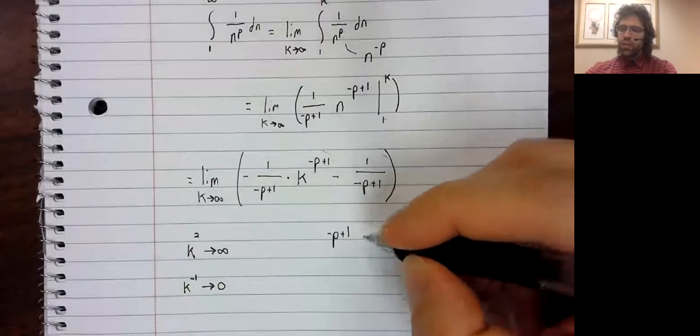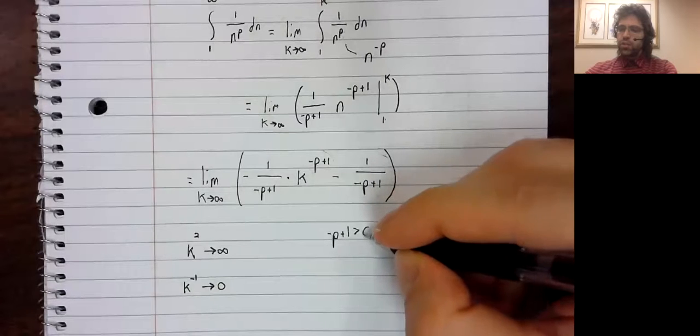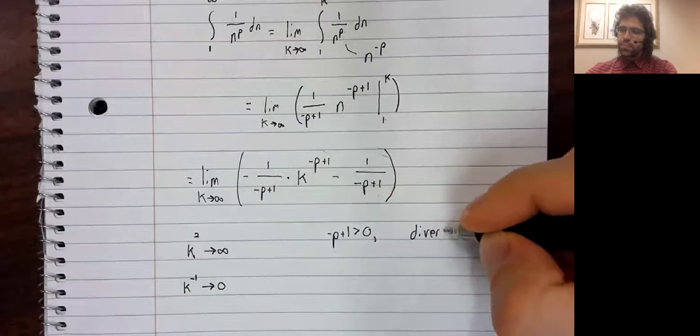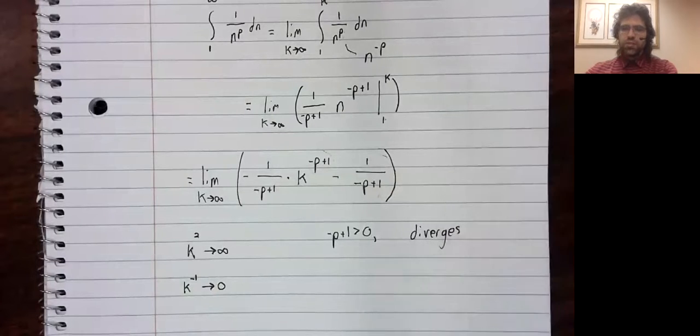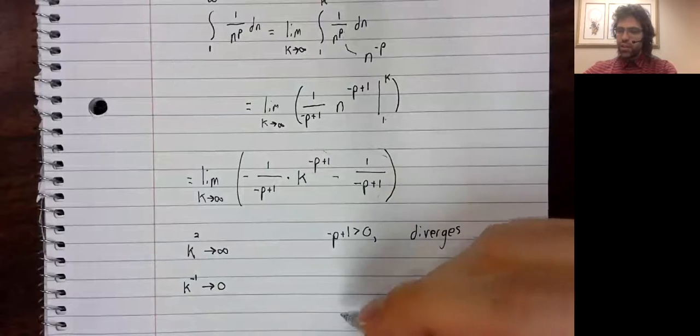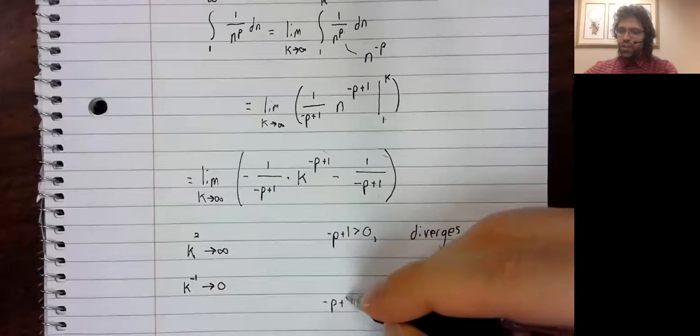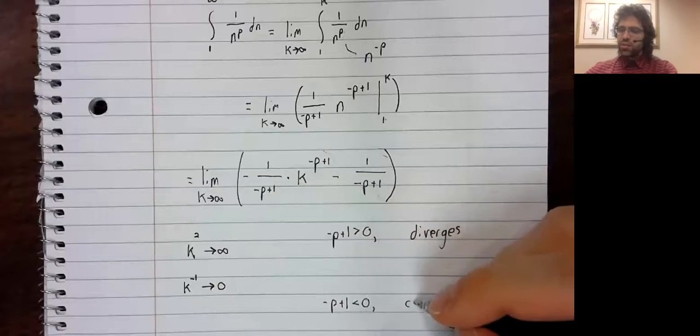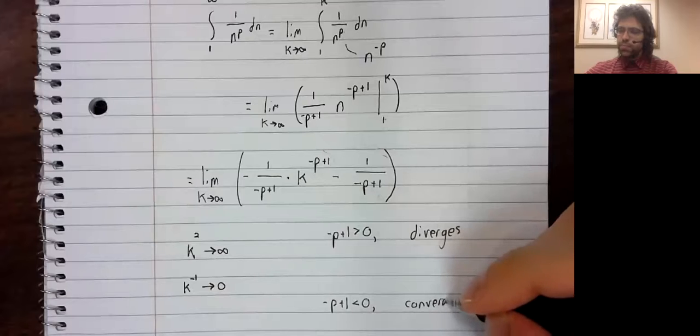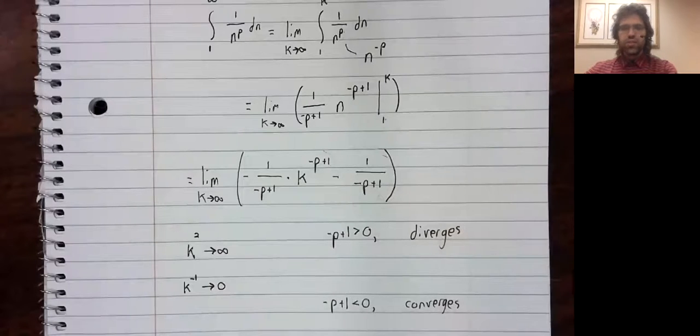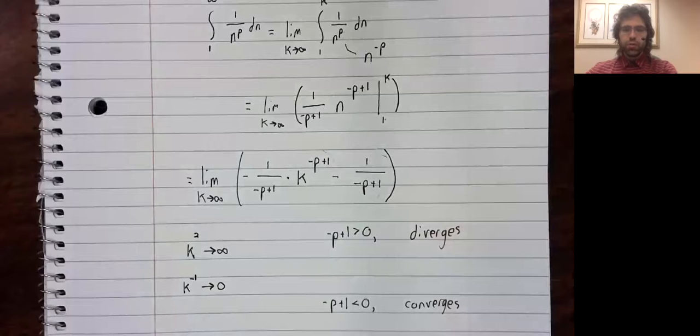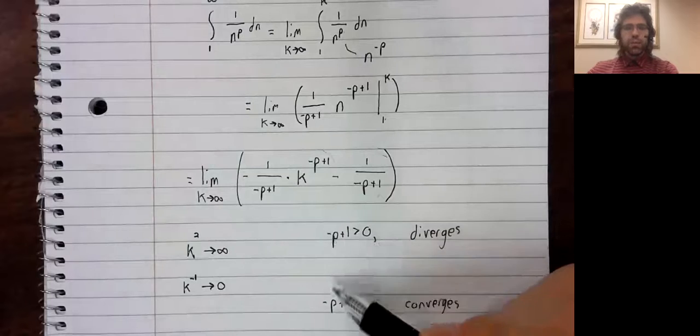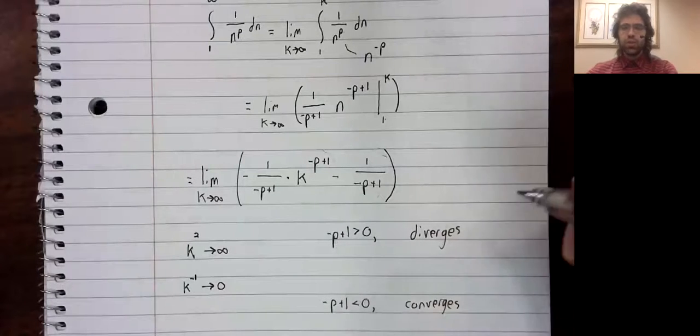If negative P plus one is greater than zero, this limit diverges. If negative P plus one is less than zero, this limit converges. So adding a P to both sides in both cases.